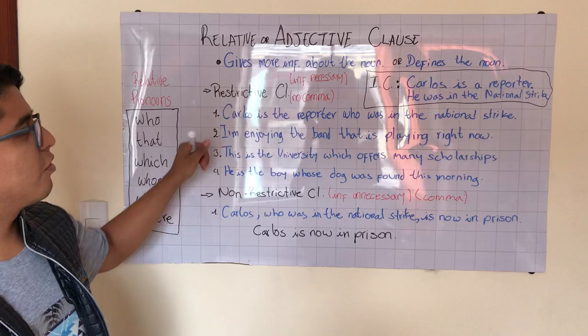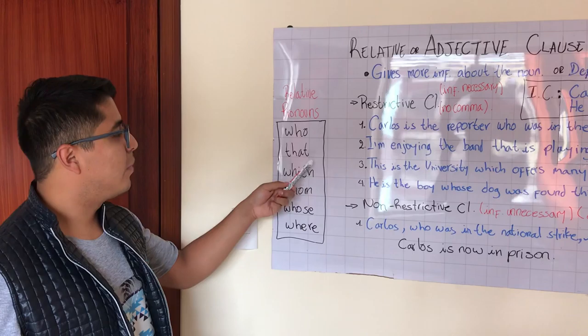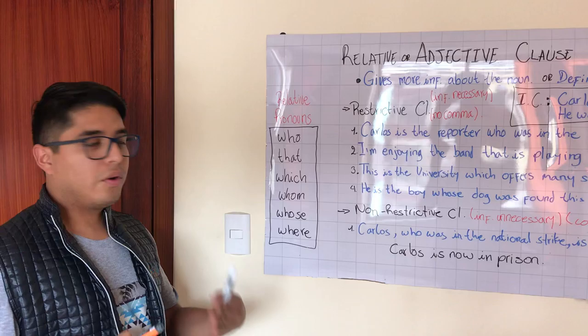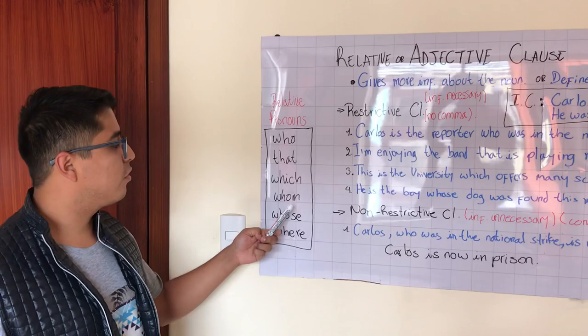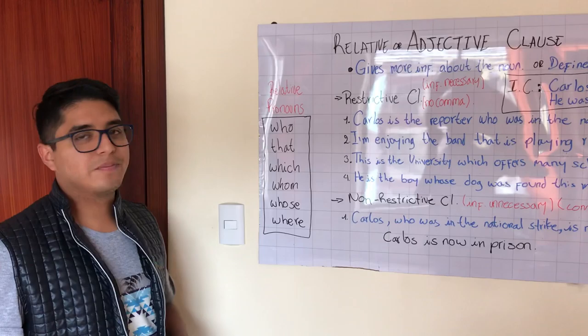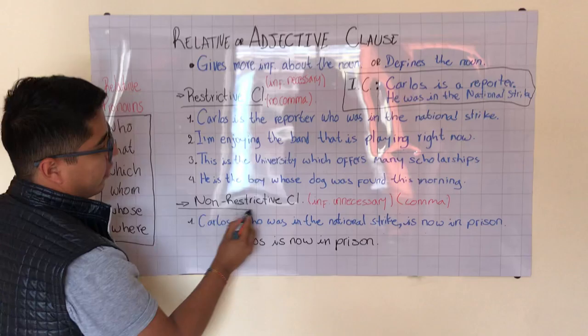In order to construct adjective clauses, we need to use relative pronouns: who, that, which, whom, whose, and where. We use 'who' for people when it functions as the subject of the clause. 'That' is also used for people but is more common for animals or beings. 'Which' is used for beings or animals. 'Whom' functions as an object and is used for people. 'Whose' shows possession — something belonging to someone — and 'where' is used for places.